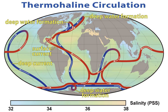Although Juan Ponce de Leon in 1513 first identified the Gulf Stream, and the current was well known to mariners, Benjamin Franklin made the first scientific study of it and gave it its name. Franklin measured water temperatures during several Atlantic crossings and correctly explained the Gulf Stream's cause.